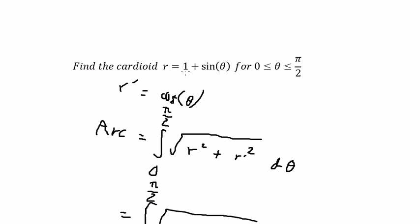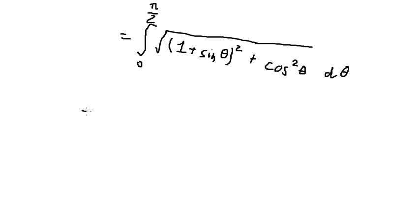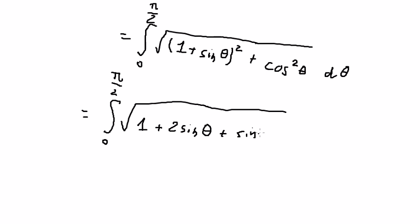r equals 1 plus sine theta, so we substitute this in and square it. This gives cosine theta squared. Expanding, we get 1 plus 2 sine theta plus sine theta squared, plus cosine theta squared.